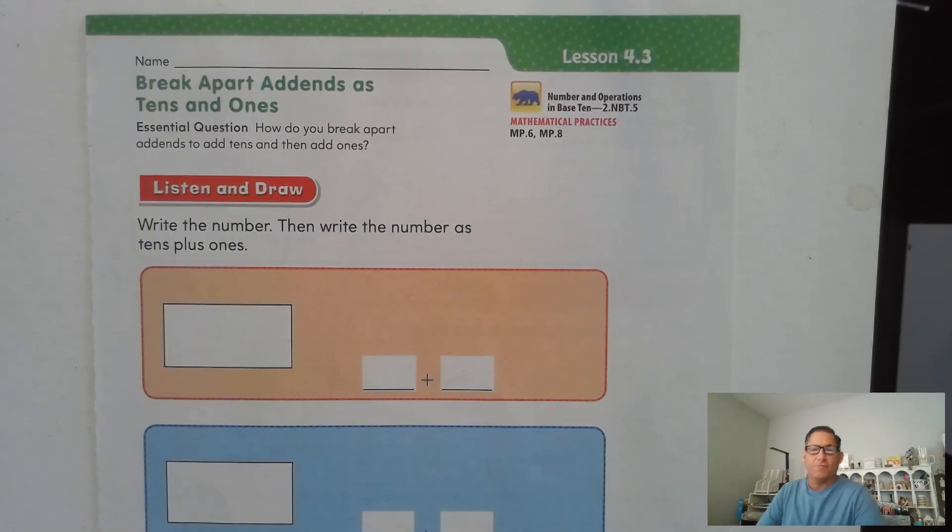Hello, everybody. In lesson 4.3 of the second grade GoMath textbook, we're going to work on a concept for breaking apart addends as tens and ones to find the sum. So basically, you need to be able to explain at the end of this lesson how do you break apart addends to add tens and ones, to add tens and then add ones.